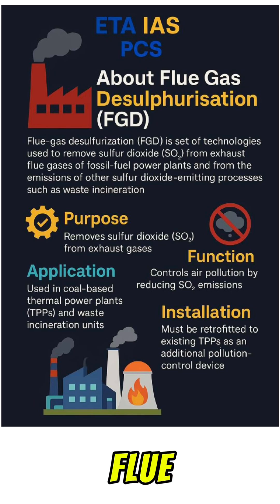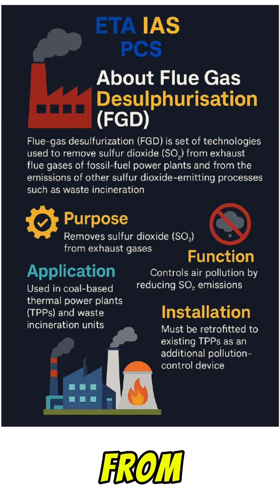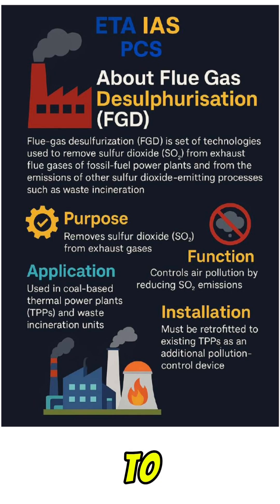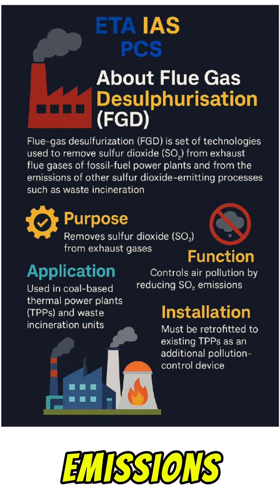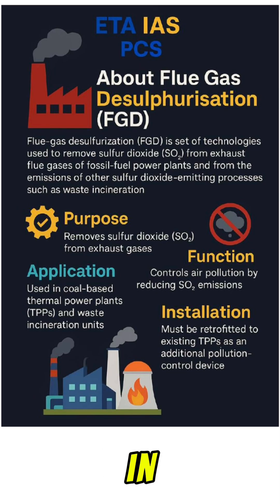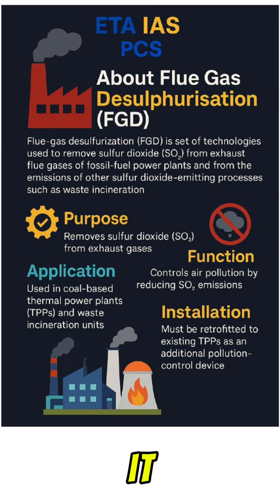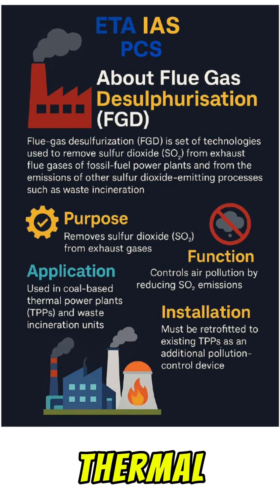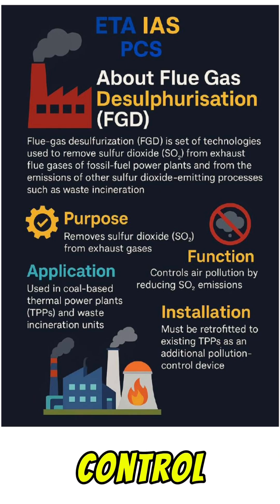What is Flue Gas Desulfurization? FGD is a set of technologies used to remove sulfur dioxide from exhaust gases. Its main function is to control air pollution by reducing sulfur dioxide emissions. It is used in coal-based thermal power plants and must be installed in existing thermal power plants as an additional pollution control device.